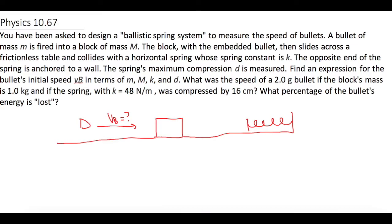Find an expression for the bullet's initial speed, v sub b, in terms of m, big M, k, and d. What was the speed of the 2-gram bullet if the block's mass is 1 kg and if the spring with a spring constant of 48 N/m was compressed by 16 cm? What percentage of the bullet's energy is lost?